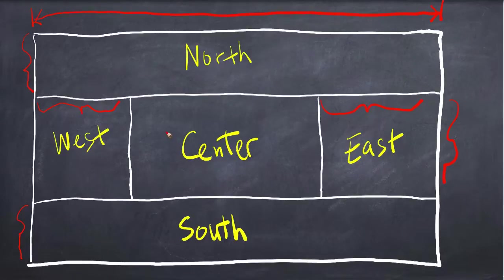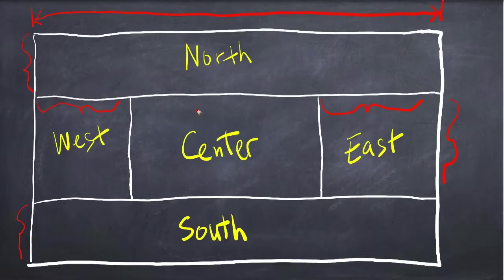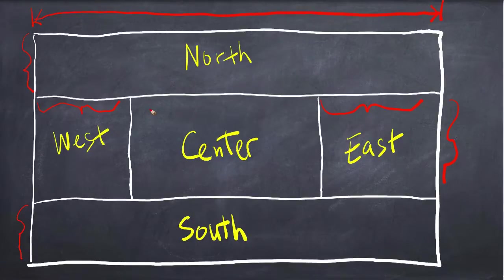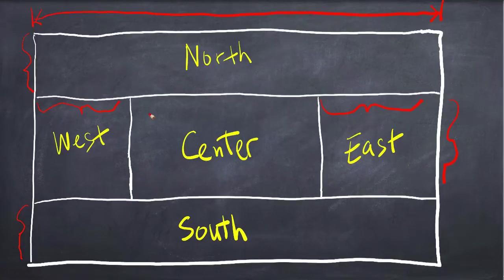The center will not respect the preferred size. It will stretch the center component to fill all the remaining space. The remaining width is whatever is left after subtracting the west and east preferred widths from the container width, and the center height is whatever remains after subtracting the north and south preferred heights from the container's height. The center dimensions are simply stretched to fill the remaining region.